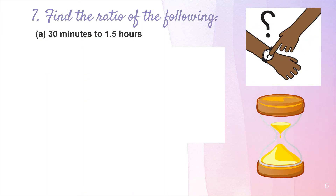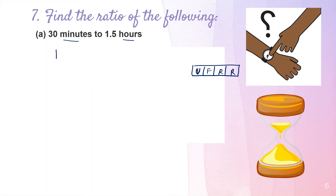I know ratio questions are very easy and interesting, and you're ready for a question involving unit conversion. Question number seven, part A: find the ratio of 30 minutes to 1.5 hours. Minutes and hours are different units, so the unit conversion step applies. We know that 1 hour equals 60 minutes.